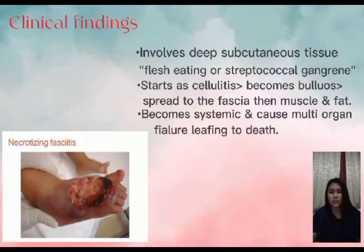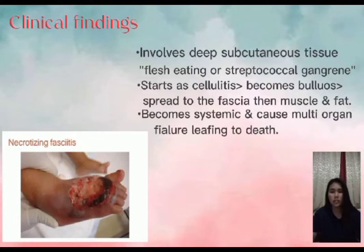Necrotizing fasciitis involves deep subcutaneous tissue. It is also called flesh-eating disease or streptococcal gangrene. It starts as cellulitis, becomes bullous and gangrenous, and spreads to the fascia and muscle. It becomes systemic and can cause multi-organ failure leading to death. Complications include acute glomerulonephritis (AGN) and rheumatic fever (RF), which are non-suppurative, immune-mediated complications. AGN is commonly associated with skin infection, while RF is usually associated with strep throat infection.